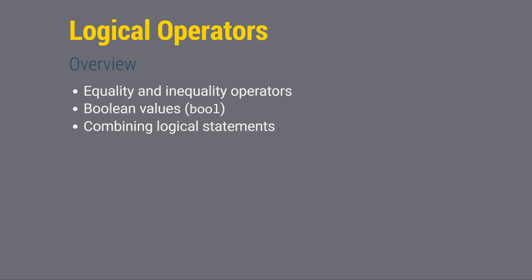This lesson introduces logical operators, both inequality and equality operators, and shows how these produce Boolean values. Boolean values are special values interpreted as true or false, but also take the values of 1 for true or 0 for false. Finally, we'll see how we can combine logical statements to construct complex expressions that involve AND, OR, and NOT.